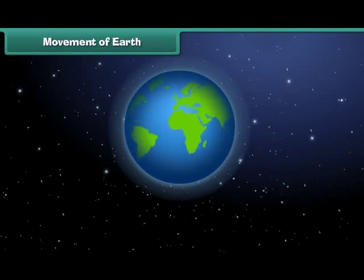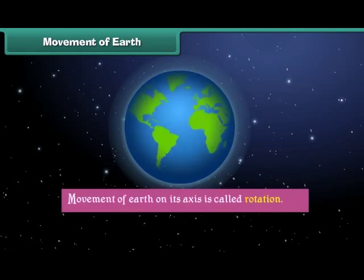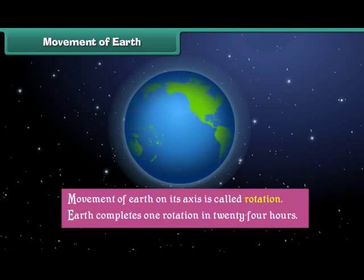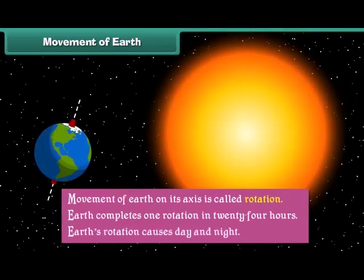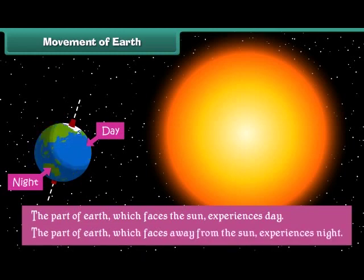Earth shows two types of movement. Movement of Earth on its axis is called rotation. Earth completes one rotation in 24 hours, and Earth's rotation causes day and night. The part of Earth which faces the Sun experiences day, while the part that faces away from the Sun experiences night.